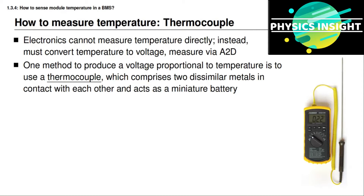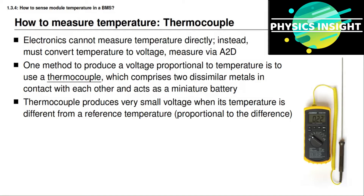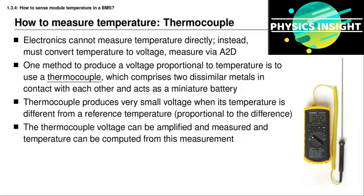The first is to use a thermocouple. A thermocouple is made from placing two different metals in contact with each other, and these different metals form a kind of miniature battery. A chemical reaction at the surface of this bimetal barrier produces a small voltage. The voltage produced by the thermocouple varies with temperature in proportion to the temperature difference between the thermocouple and some reference temperature at a different point in the circuit. This voltage difference is usually very small — on the order of microvolts — but it can be amplified and measured to produce a temperature reading.